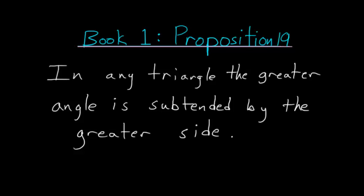For Book 1 Proposition number 19 of Euclid's Elements, in any triangle the greater angle is subtended by the greater side.